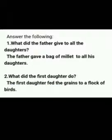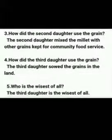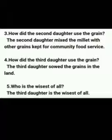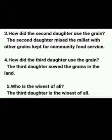Now let's move on to the question answers of this supplementary. Answer the following: One — What did the father give to all the daughters? The father gave a bag of millets to all his daughters. Two — What did the first daughter do? The first daughter fed the grains to a flock of birds. Three — How did the second daughter use the grains? The second daughter mixed the millets with other grains kept for community food service. Four — How did the third daughter use the grains? The third daughter sowed the grains in the land. Five — Who is the wisest of all? The third daughter is the wisest of all. These are your five question answers from your supplementary section.